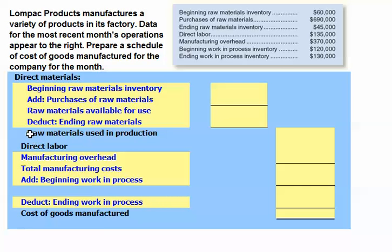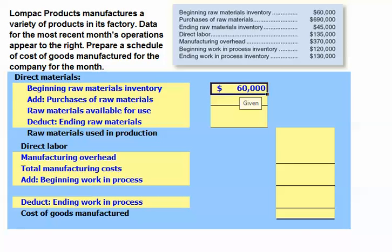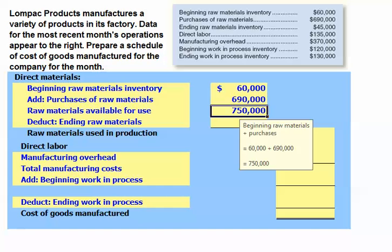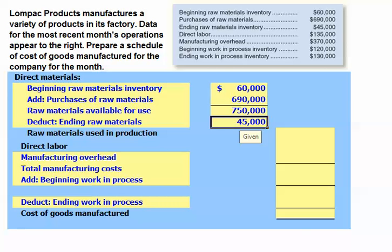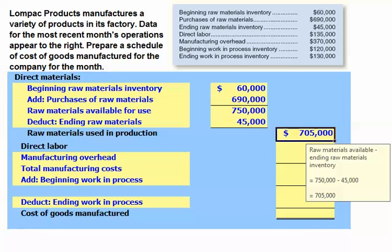Our first step is to calculate our raw materials used in production. We start with beginning raw material inventory of $60,000, and add purchases of $690,000, giving us raw materials available for use of $750,000. This amount is either used in production or left over as ending raw materials inventory. With ending raw materials inventory of $45,000, the raw materials used in production must be $705,000.